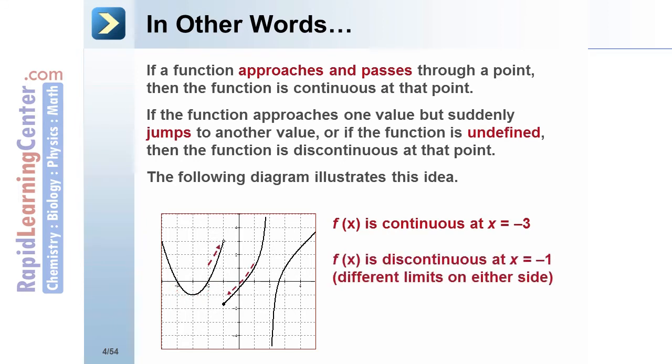But if you look at x = -1, the function evaluated at -1 equals -1.5. The function approaches the value -1.5 from the right but the value 3 from the left. Since the limit is not defined at x = -1, the function is discontinuous at that point.